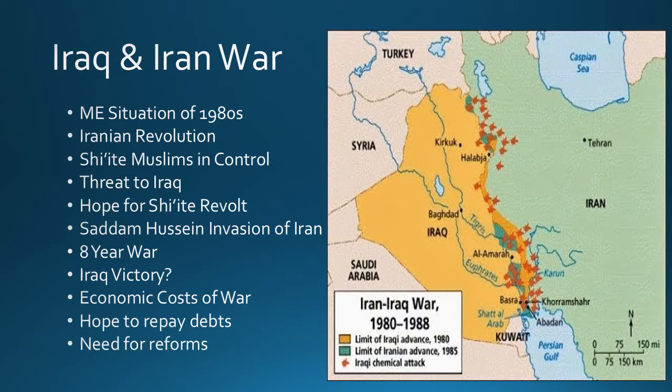The additional economic cost for Iraq was not good for Saddam Hussein and the Iraqi government. Life in Iraq was pretty bad — poor conditions, not a good quality of life. For legitimacy, Saddam needed to institute reforms, but now with this huge war bill, he wasn't going to be able to achieve the reforms he'd hoped for. This war and the massive debt it put Iraq in is going to be a major catalyst for their next action, which helps cause the First Gulf War.